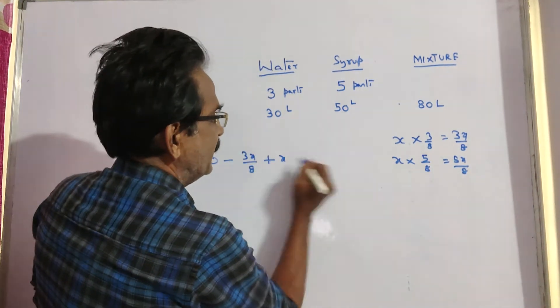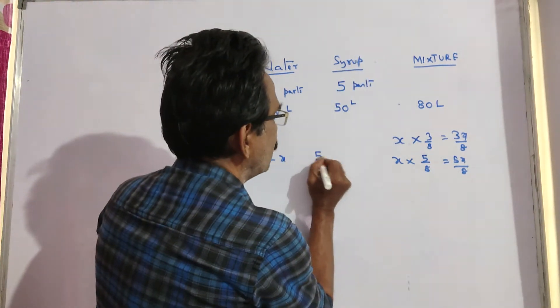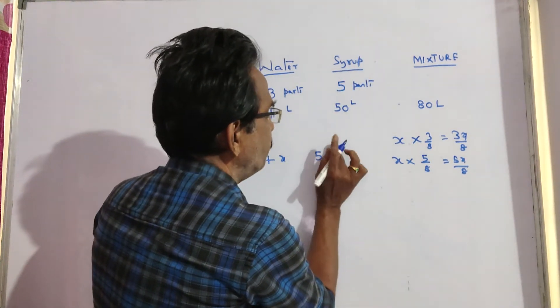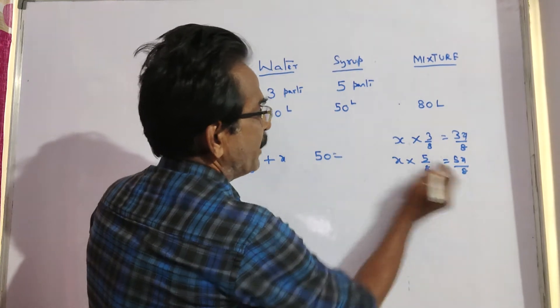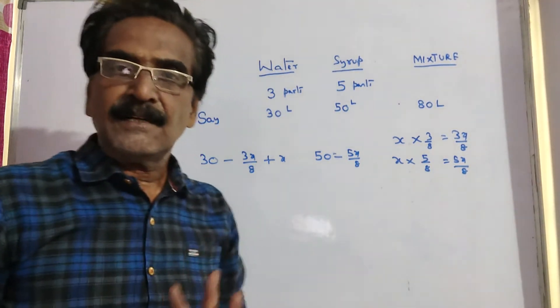So, plus x, this is about water and let us see the syrup. Initially, there was 50 liters of syrup and 5x by 8 liters of syrup is drawn.